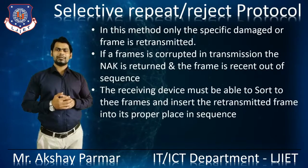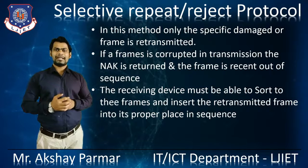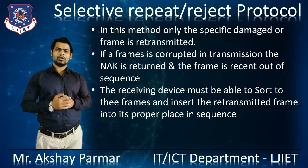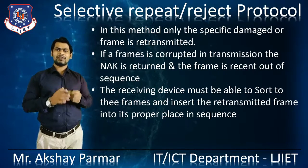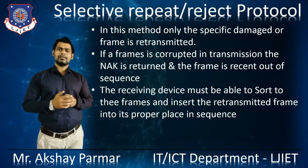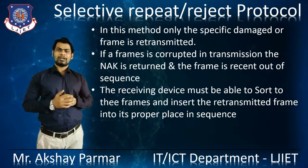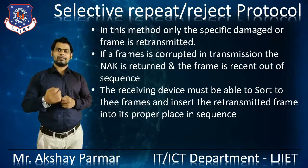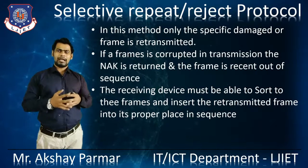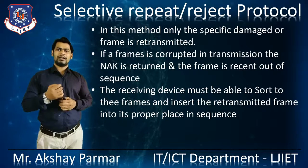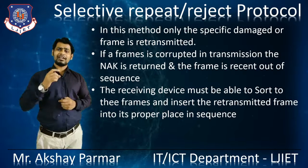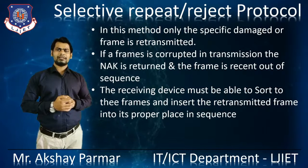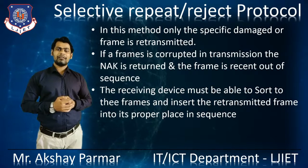In our previous video we have seen many techniques. In our previous method, if any particular frame is damaged or not received successfully, all the frames after that are retransmitted. But in this Selective Repeat or Reject protocol, only the specific damaged or unreceived frame is retransmitted. If a frame is corrupted during transmission, a negative acknowledgement is returned to confirm that the frame is corrupted or received erroneously.